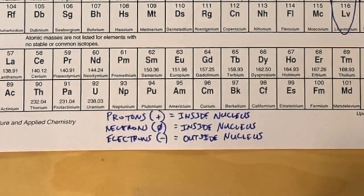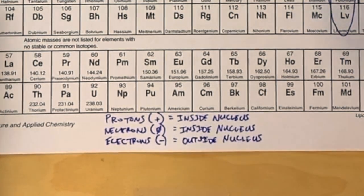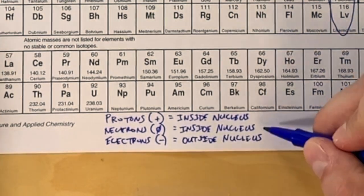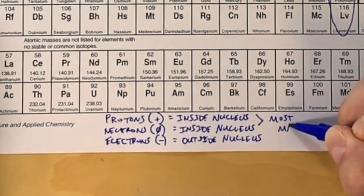The protons and neutrons make up the bulk of the mass of an atom. So when you add those together, you'll get the atomic mass. And then the electrons have very little mass at all.